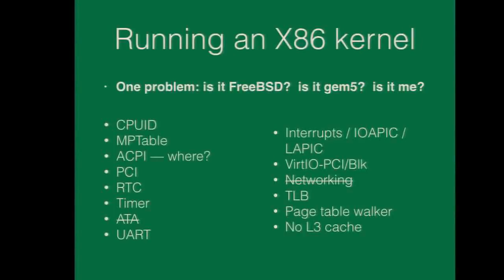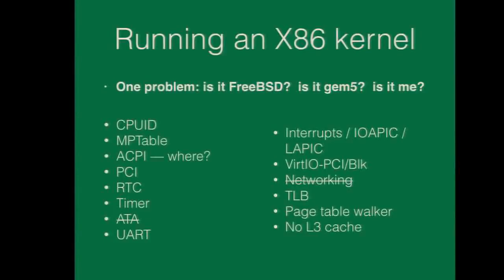Scraping all these things together takes time and lots of debugging. ARM was a lot easier. Ruslan — he's not here this year — had done FreeBSD for GEM5 up front, so for me it was getting a few things sorted a year later. Most of them were minor initially. The FDT update from ARM helped a lot. Andy helped a lot — he's sitting somewhere in there. Then FreeBSD interrupt handling came into all of this and took another week or month. It just stops you from doing your work.